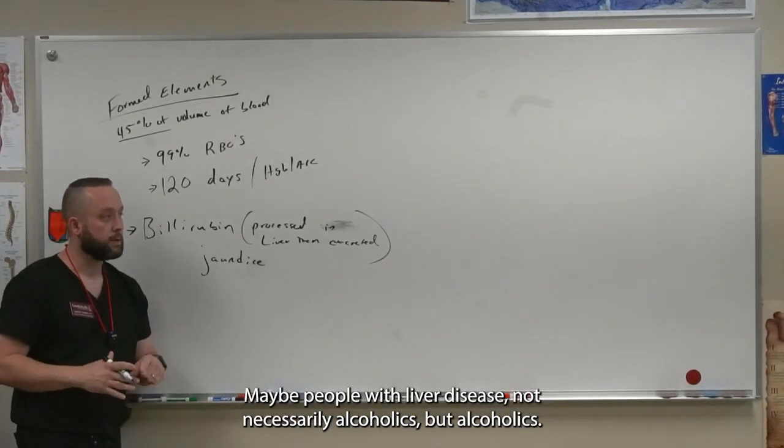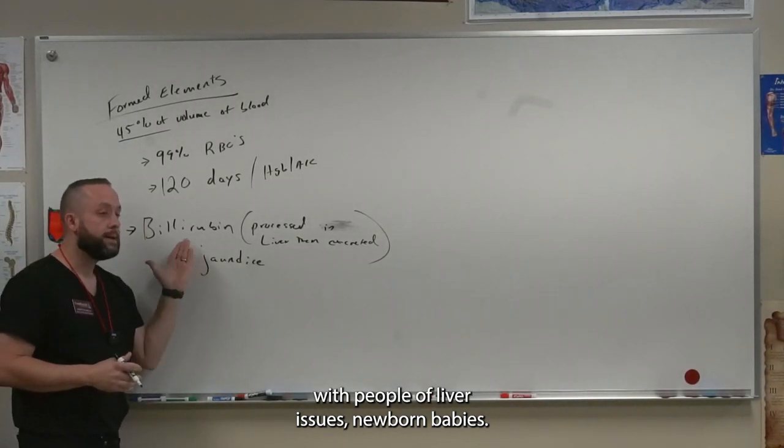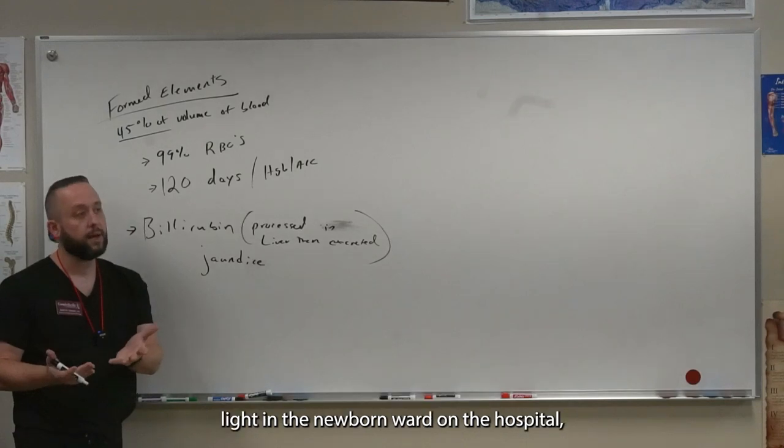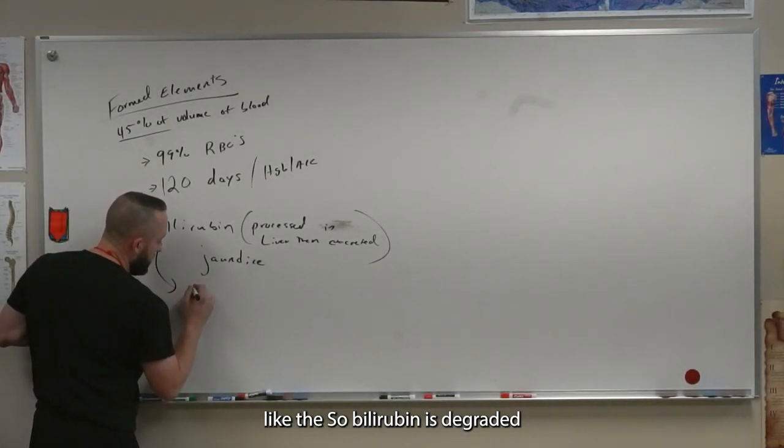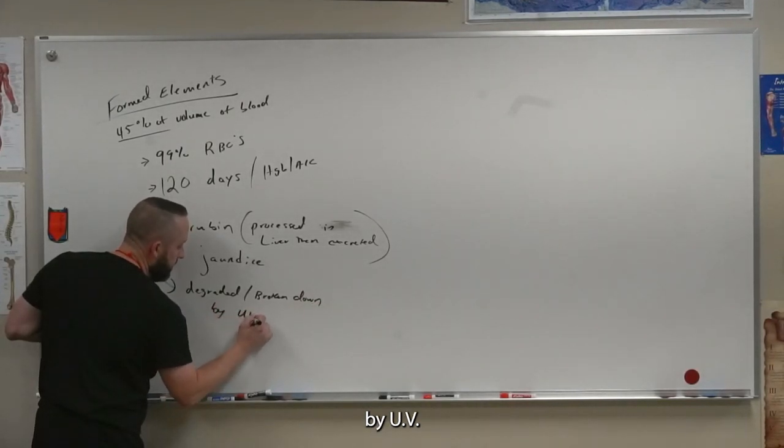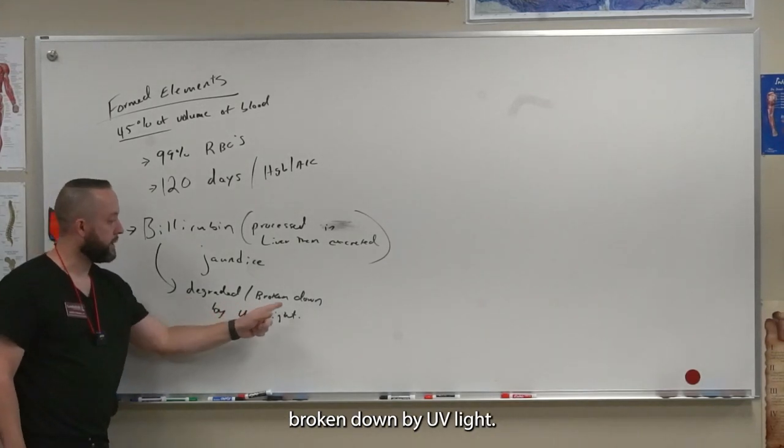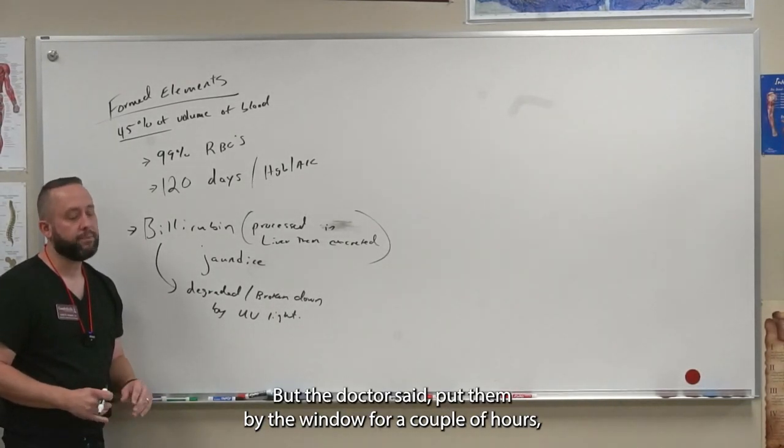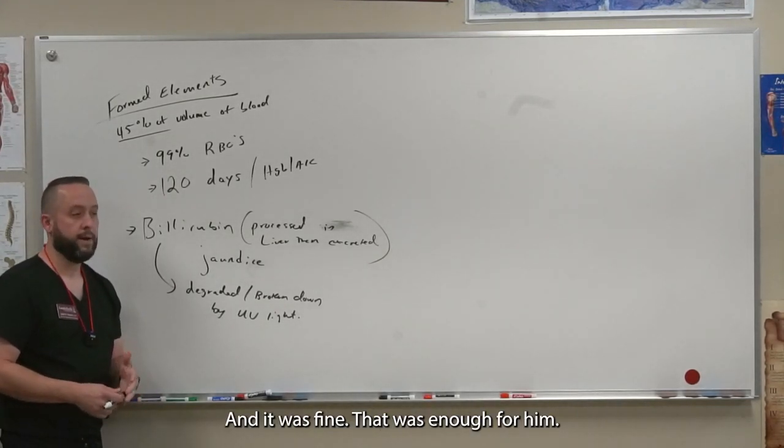Maybe people with liver disease, not necessarily alcoholics, but alcoholics, it's a hallmark for them. You'll even see the whites in their eyes become yellow sometimes with people with liver issues. Newborn babies, their liver is often immature still, and so the bilirubin is backing up and they'll be jaundiced, and they'll have to go into their UV light in the newborn ward at the hospital. Bilirubin is degraded or broken down by UV light, and that's why we put them under that blue light for newborns. My son Henry wasn't sick enough to need the UV light. They let us go home, but the doctor said put them by the window for a couple of hours, get some sunlight on him, and then come back and see me in three days and check his hemoglobin again, and it was fine.